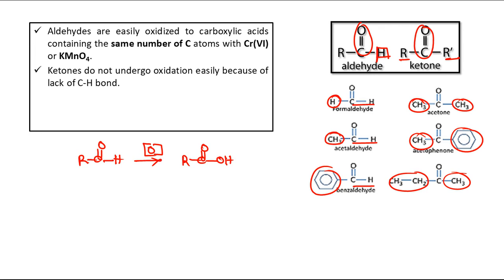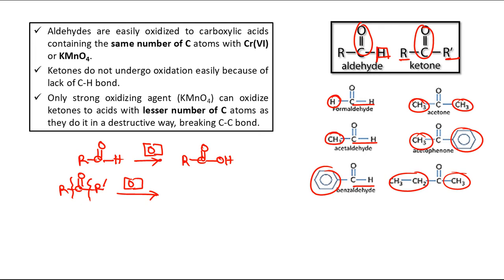The actual reason for ketone resistance is the lack of a CH bond. In ketone oxidation, both sides have CC bonds, and when oxidation does occur the conditions must be very drastic. Depending on which CC bond breaks, we get a mixture of carboxylic acids. Only a strong oxidizing agent like KMnO4 — not chromium(VI) reagents — can oxidize ketones, because the conditions must be very harsh.